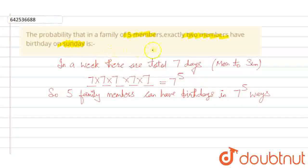In question, we have to find that exactly 2 members should have birthday on Sunday. So we will choose any 2 members that can be done in 5C2 ways. Out of 5 members, we will choose any 2 members.